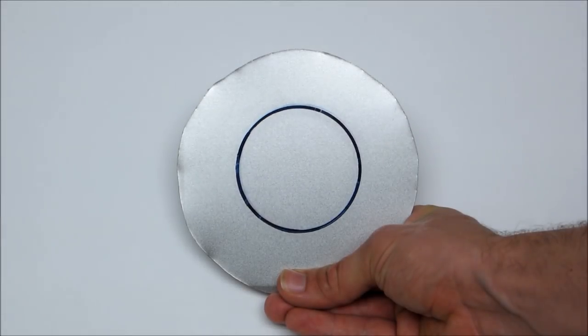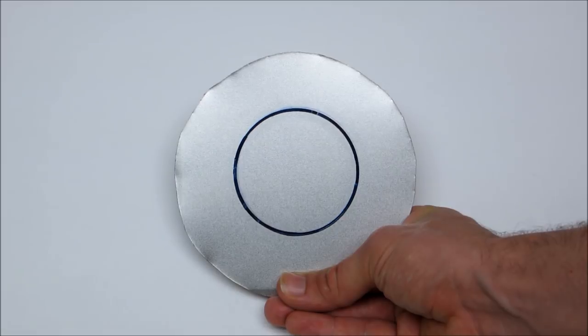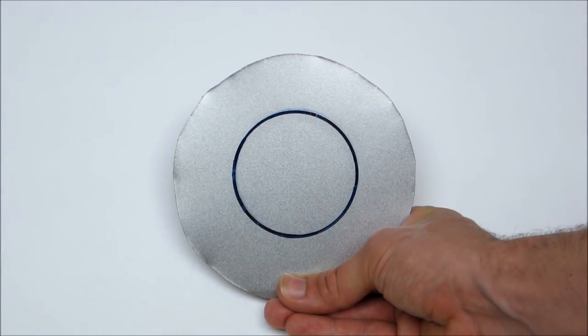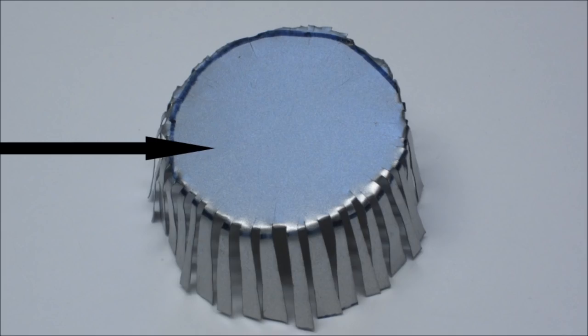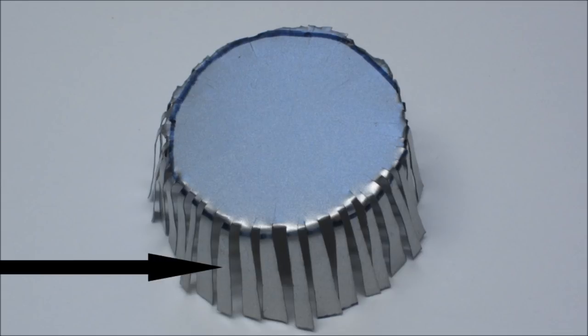Start by cutting out a 5 inch diameter circle from your sheet metal. Then draw a 2.5 inch diameter circle inside the cutout. The area inside the inner circle will be the chip platform. The outer portion will be used to make the supports.